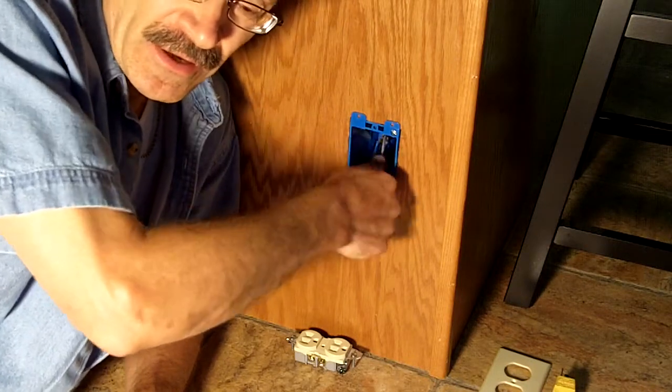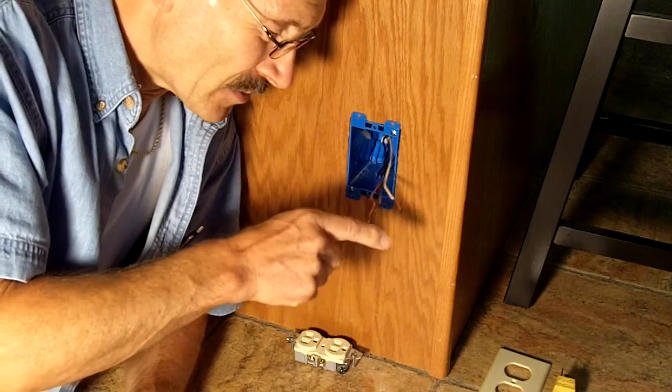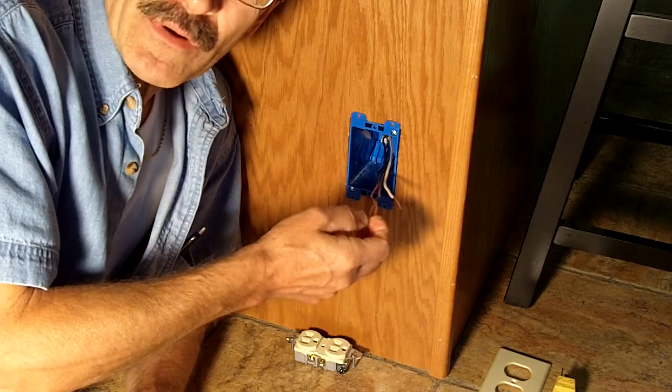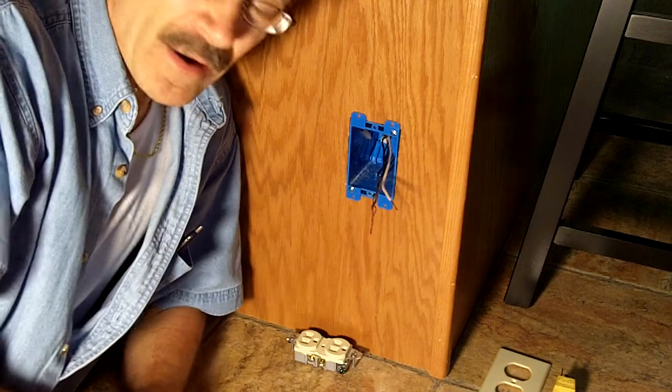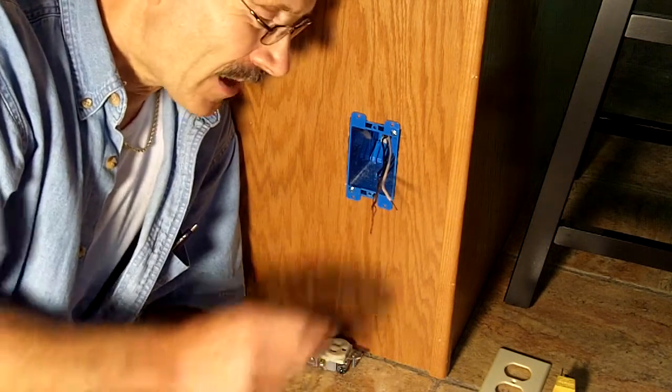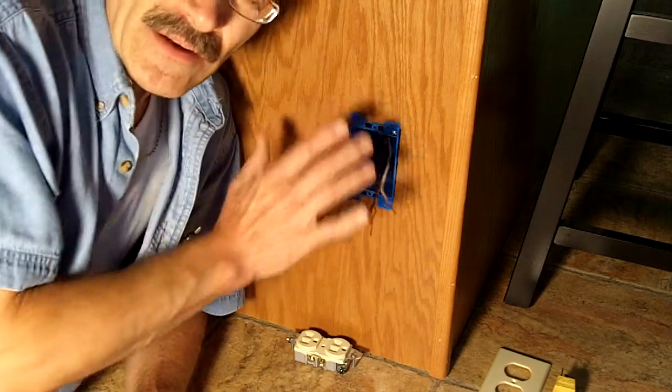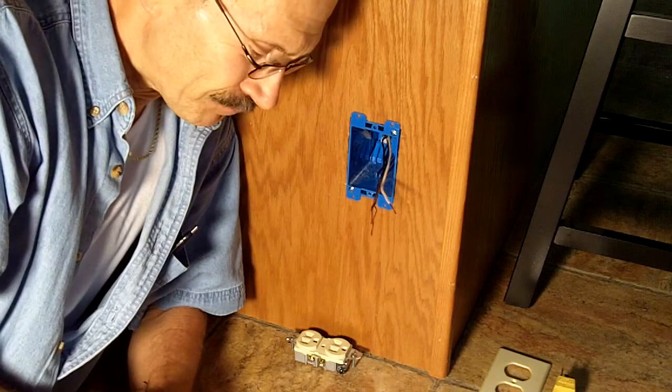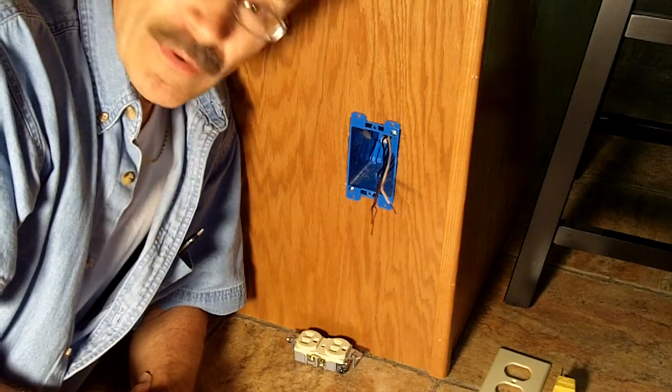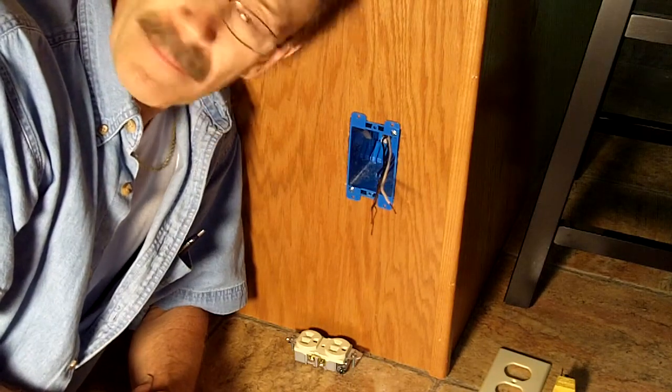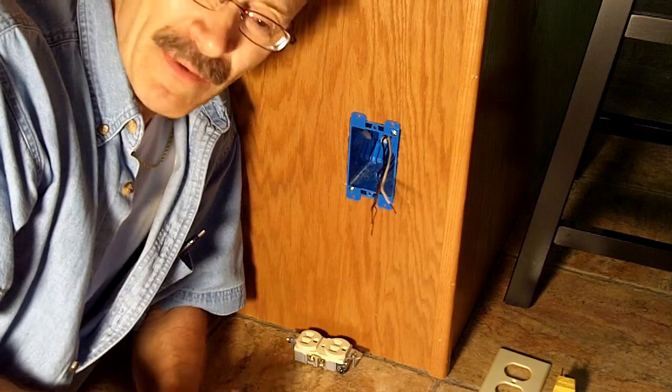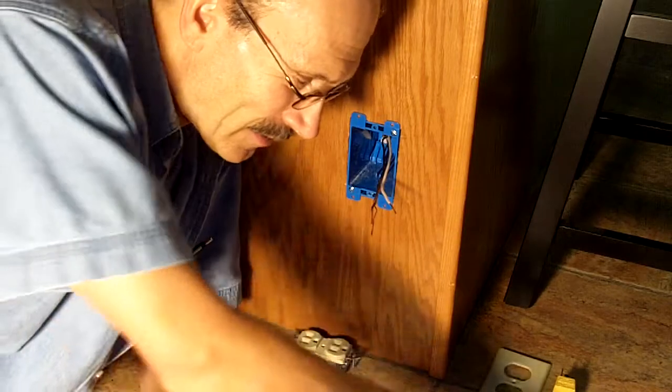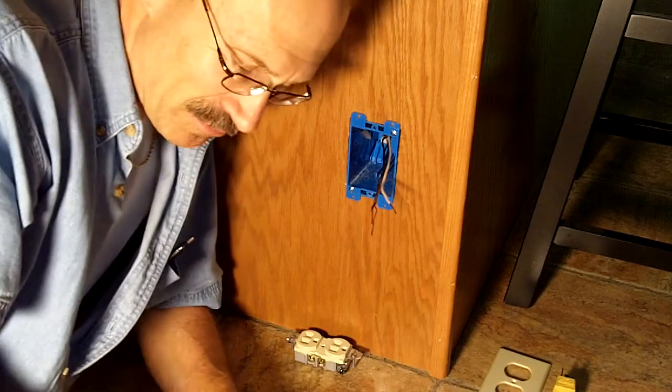In previous videos I showed you a couple of the finer points of differences between receptacle devices and how to strip the wire and wrap it around the post and tighten it down. Today I wanted to show you how to actually install one in the box, so I'm going to rearrange myself so I can sit up and do the work. You won't be able to see my face probably, but my face is probably the least important part.